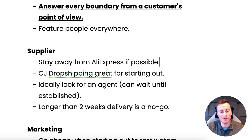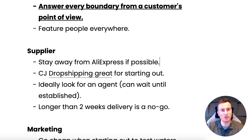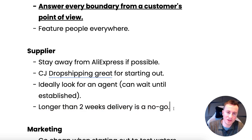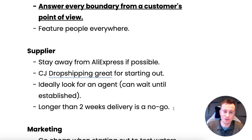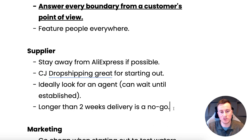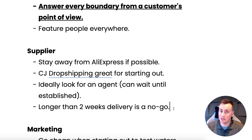Ideally look for an agent — there's a bit more work and trust involved, so this can wait until you're established, but if you can get a recommendation it's always a good route. Last but not least: longer than two weeks delivery is a no-go. Anything under that is manageable for the dropshipping stage. Going back to that proof of concept idea — less than two weeks delivery works well to validate the business before moving on to private labelling. Make sure whoever you're speaking to can guarantee 90% of parcels are delivered within that two-week mark.